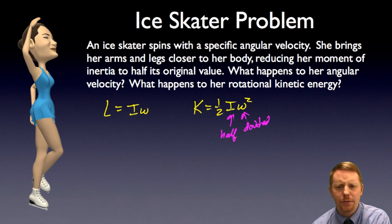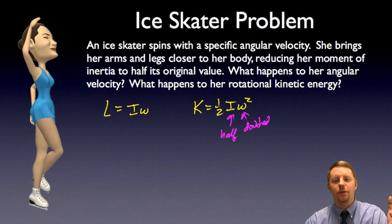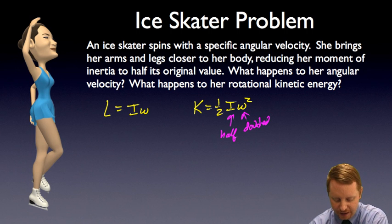But where did that energy come from? Think about it. If she's skating and her arms are way out there, she has to do work to pull her arms and legs in. The work that she did pulling those arms and legs in leads to the doubling of that kinetic energy.